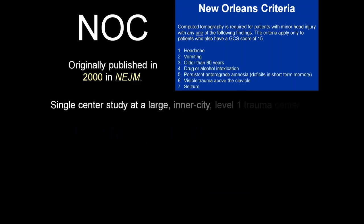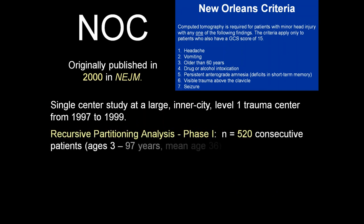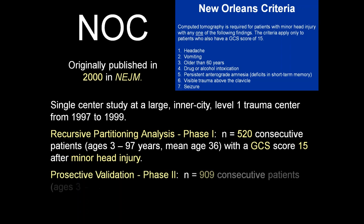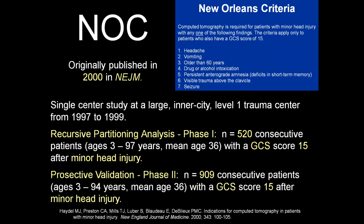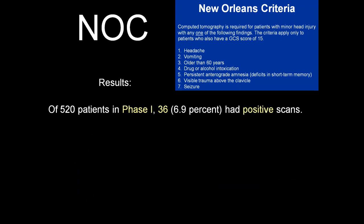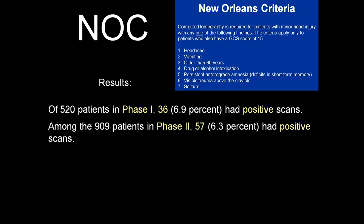The New Orleans criteria — also called the charity head rules for the hospital where they were developed — is from the year 2000, New England Journal of Medicine. It's a single-center study at Charity Hospital in New Orleans. Phase 1 included 520 patients with a GCS of 15 after minor head injury, with roughly 7% having positive scans. Phase 2 applied the rules to roughly 1,000 patients, again with a GCS of 15, with about 6% having positive scans. All patients with a positive CT had one or more of the seven criteria.